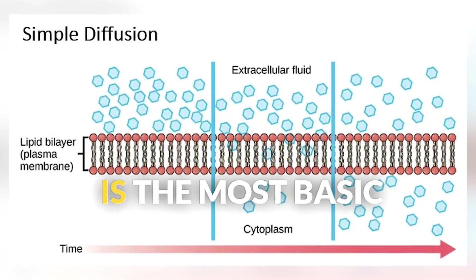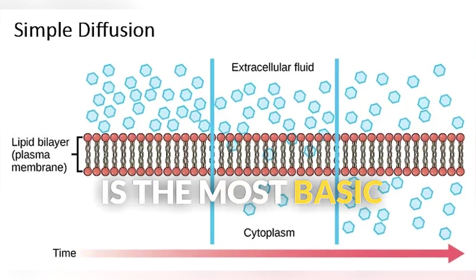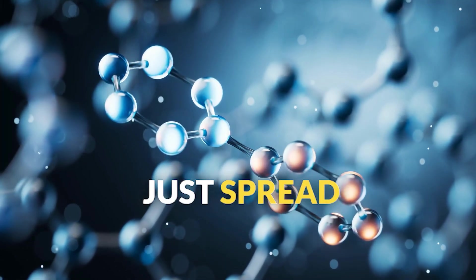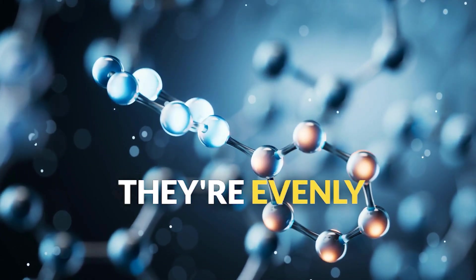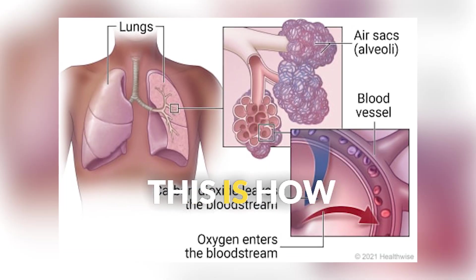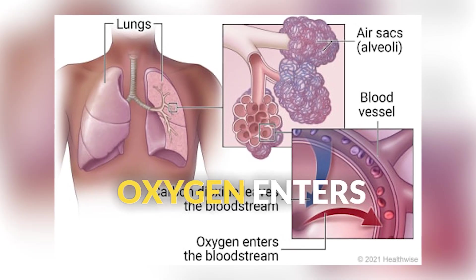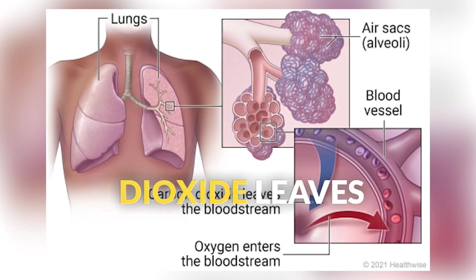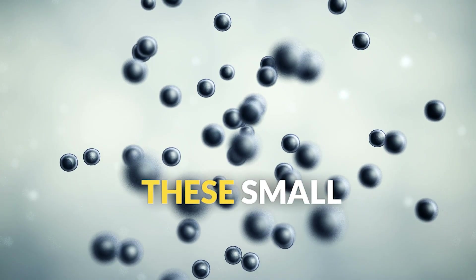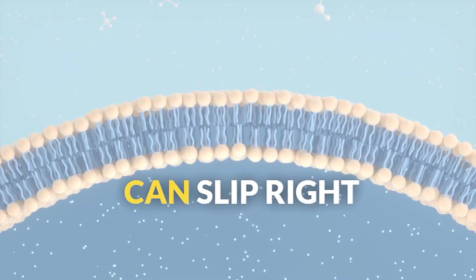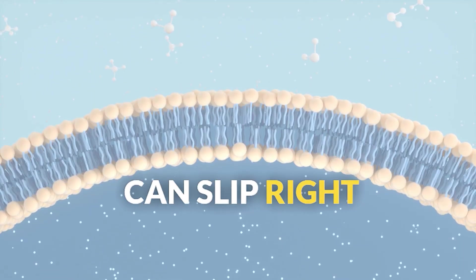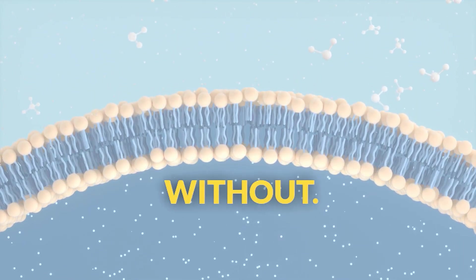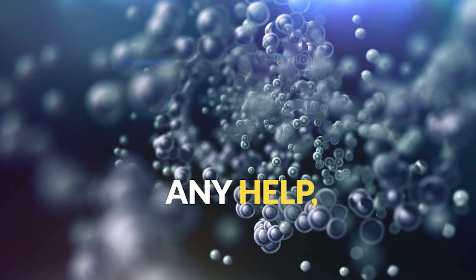Simple diffusion is the most basic type — molecules just spread out until they're evenly distributed. This is how oxygen enters your cells and carbon dioxide leaves. These small, uncharged molecules can slip right through the phospholipid bilayer without any help.